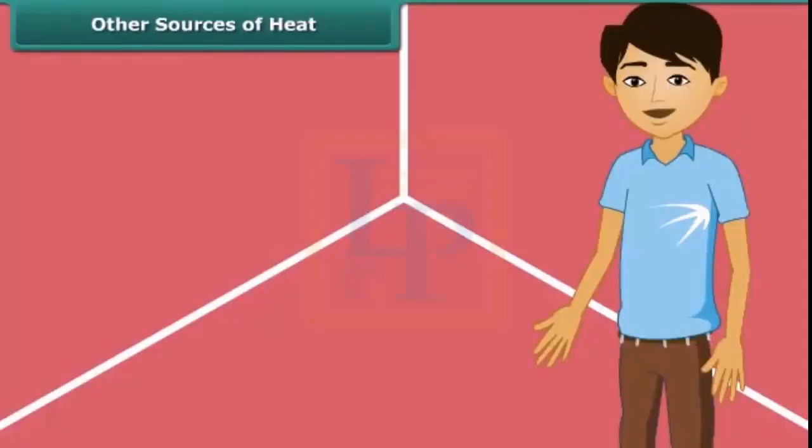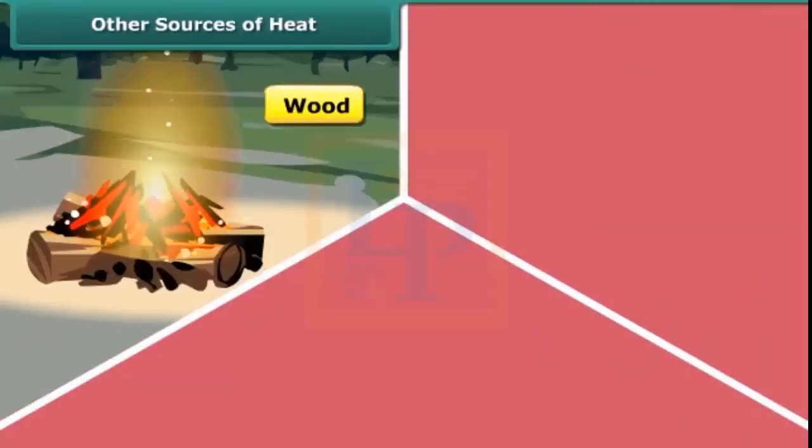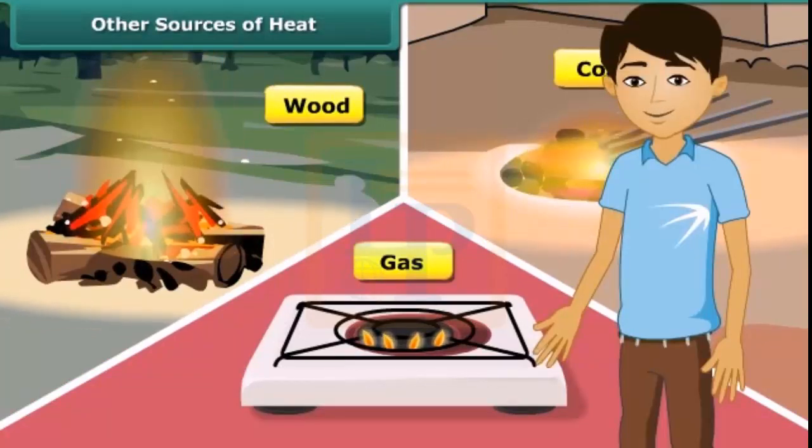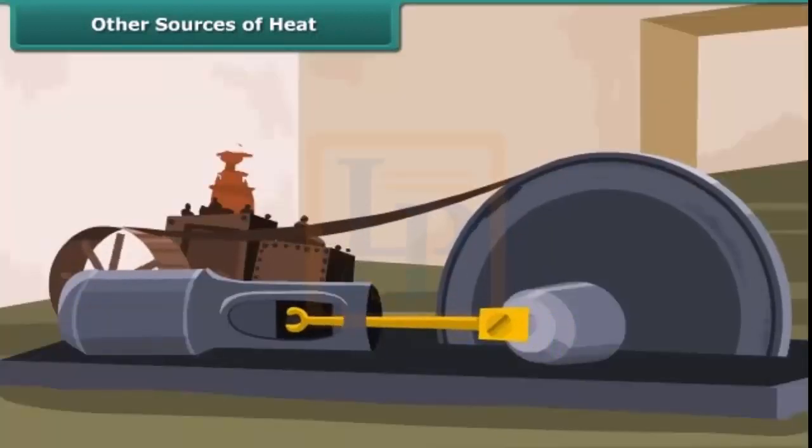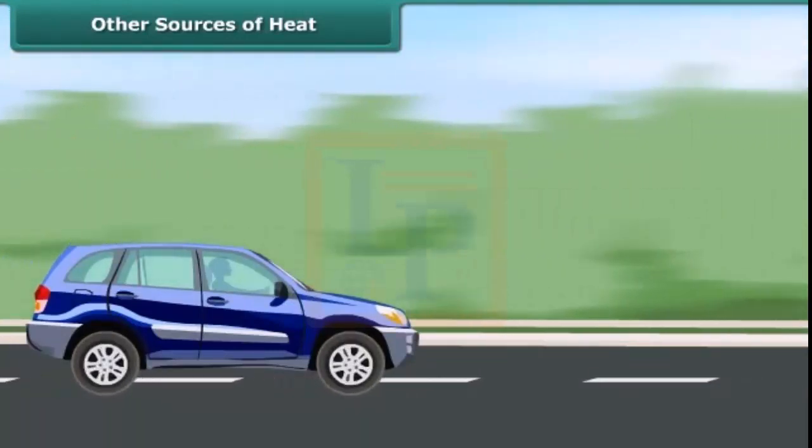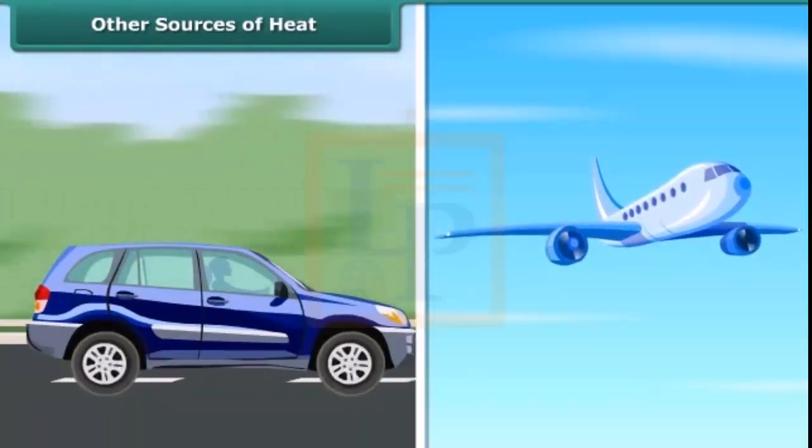Man can generate heat by burning wood, coal and gas. Wood, coal and gas are called fuels. Fuels burn in machine to make them work. A motor car runs by burning fuel. An aeroplane flies by burning fuel.